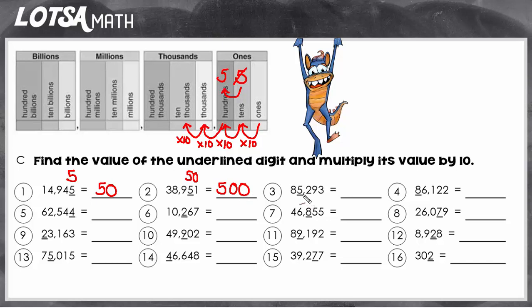Let's look at this example. This time we have a 5 in the thousands place. So right now, the value of that 5 is 5,000. So now, according to the directions, we have to multiply it by 10. So 5,000 times 10.